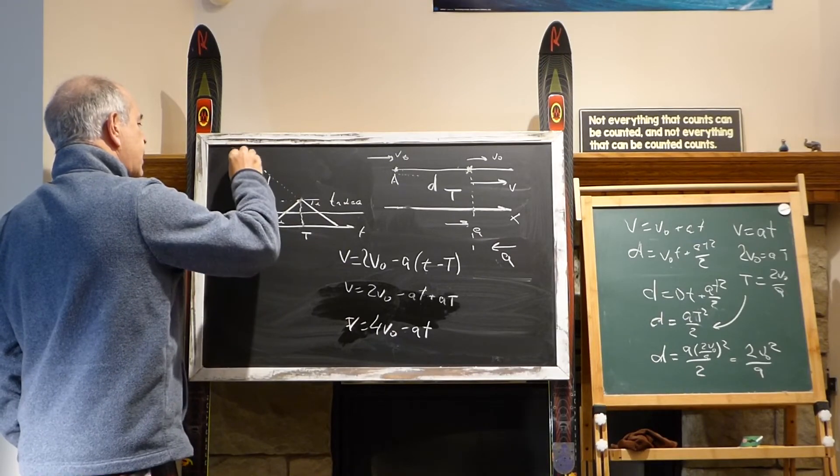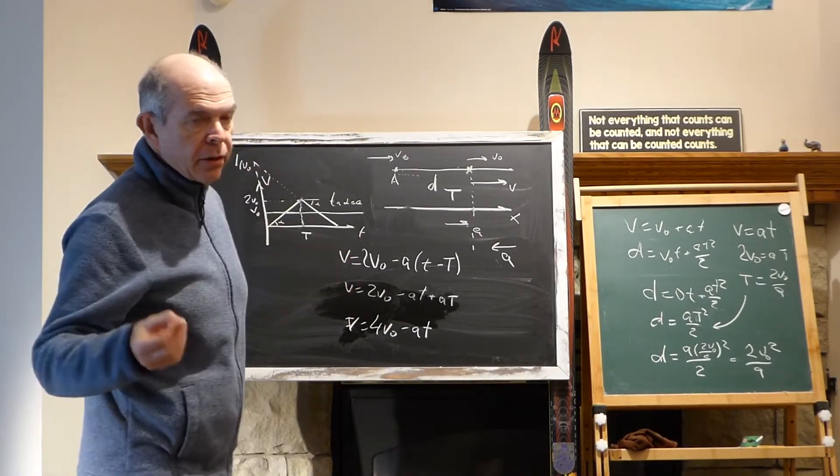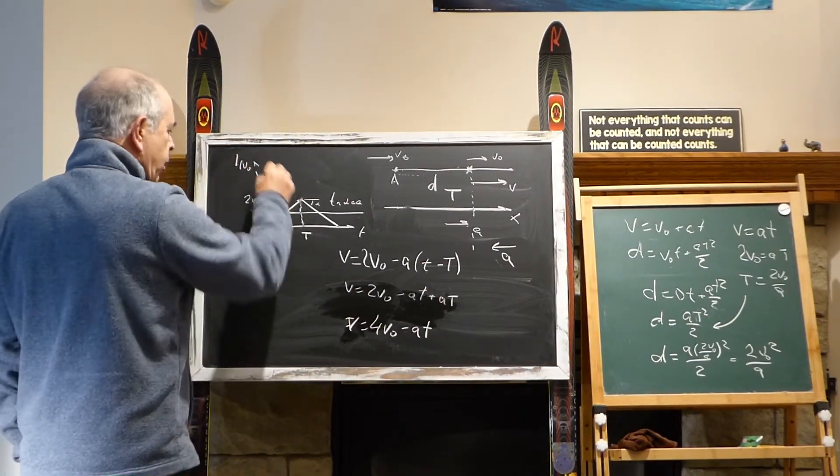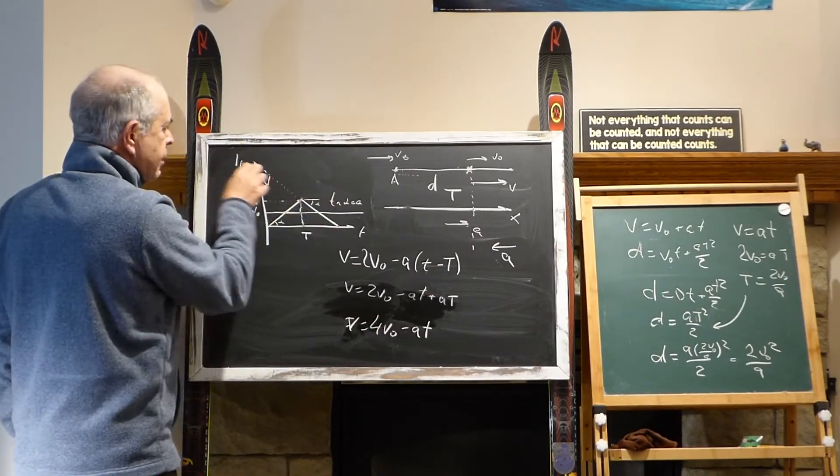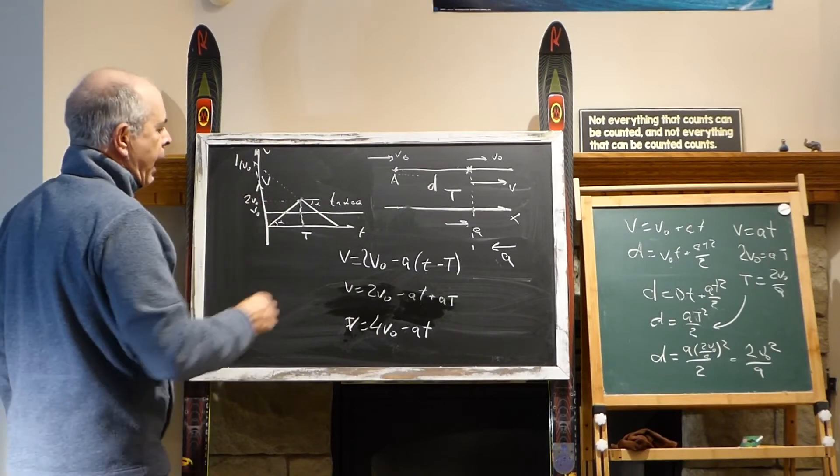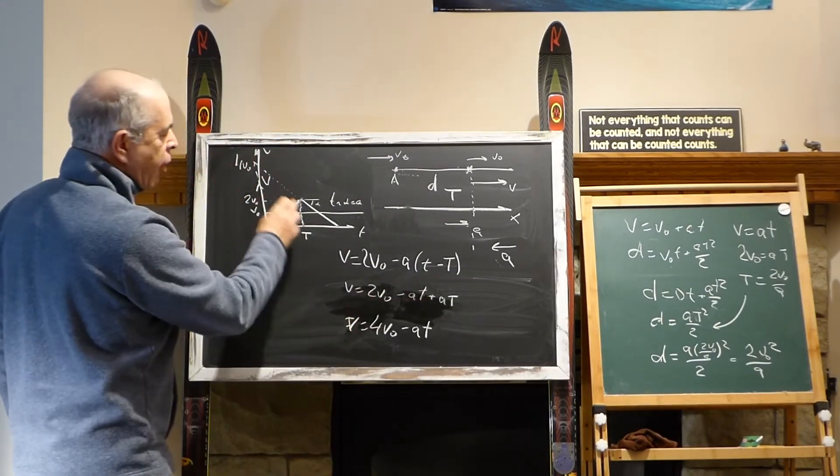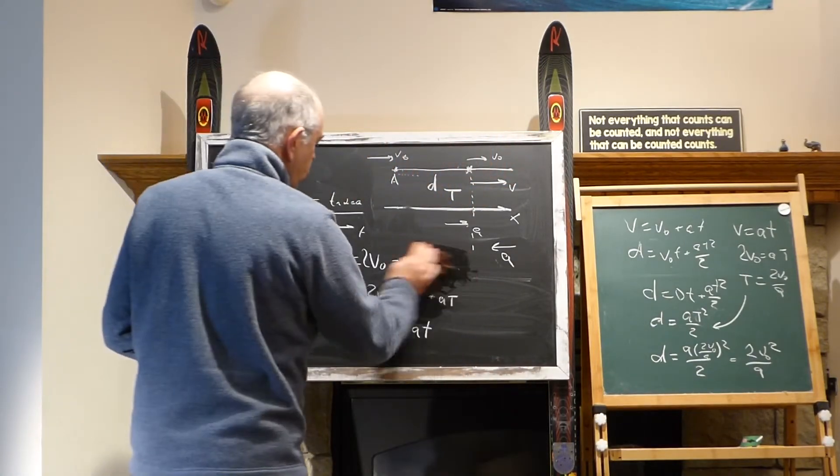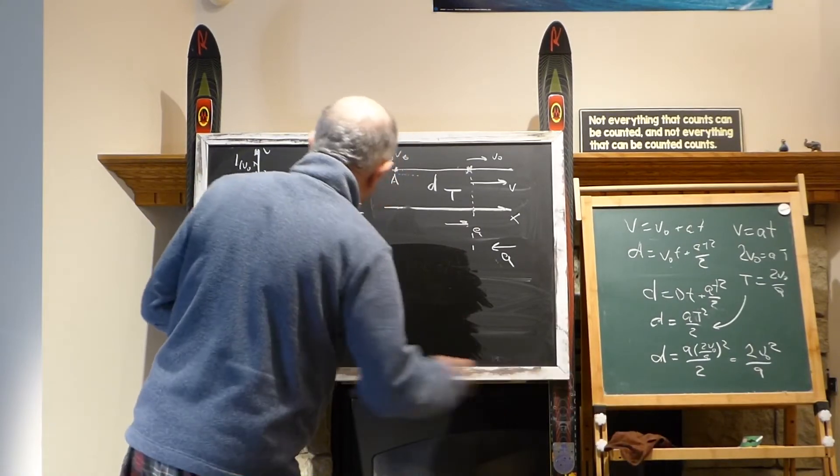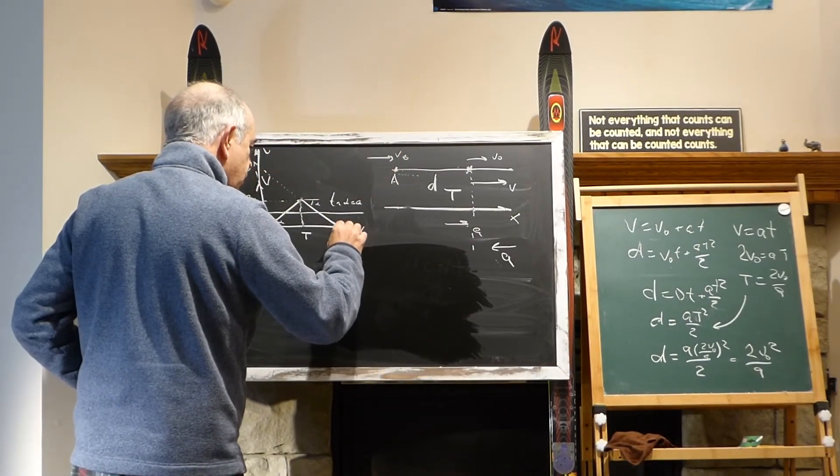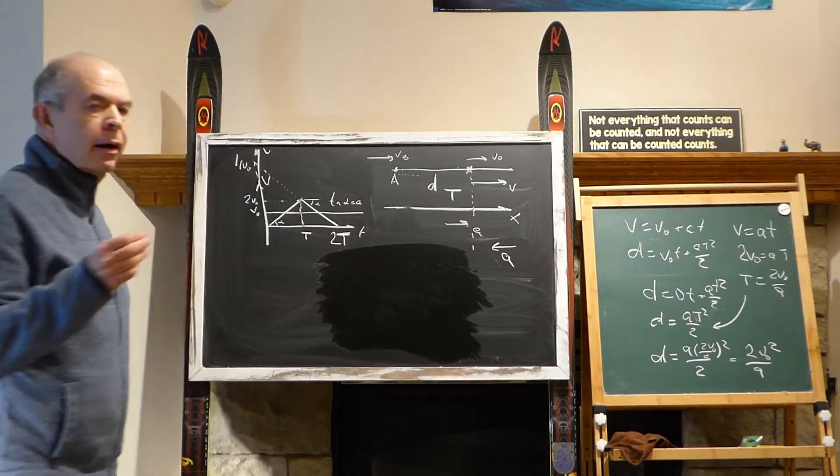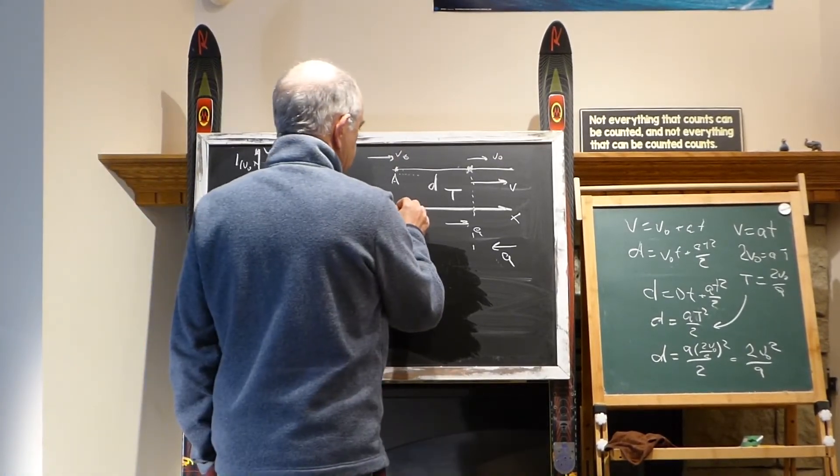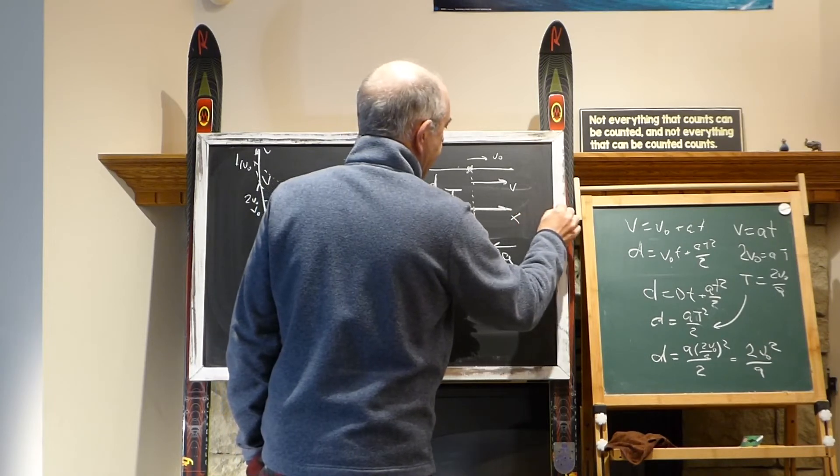This is the graph of this line. If we continue it here, it will cross at 4v0. We're not continuing it, it's not describing the motion, but if this formula would be applied, this is where this line would cross the vertical axis v. Just looking at the formula or looking at this graph, we can tell that at the moment 2t, the car will reach a total stop.